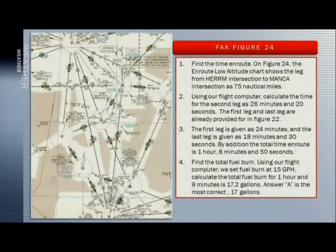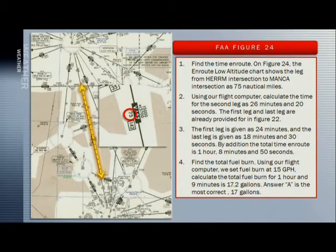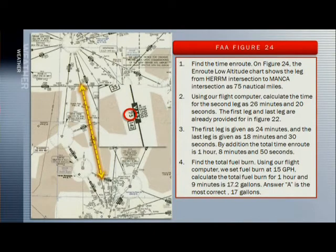Now, in figure 24, we find the time en route. The en route low altitude chart shows the leg from Herm intersection to Manca intersection is 75 nautical miles. Using our flight computer, we calculate the time for the second leg as 26 minutes and 20 seconds. The first leg and last leg are already provided in figure 22. The first leg is given as 24 minutes, and the last leg is given as 18 minutes and 30 seconds. By adding them together, the total time en route is 1 hour, 8 minutes, and 50 seconds.